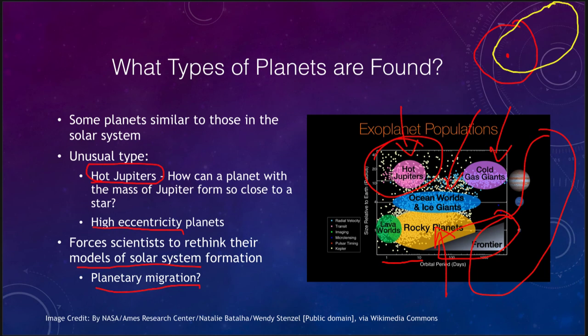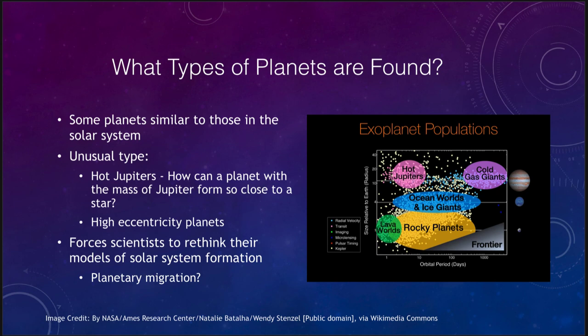But we do have to rethink how things work. Planetary migration may have played a part in our own solar system. But maybe it plays an even larger part in others, allowing those Jupiters to not only migrate closer, but to get much closer. And in fact, to the point where they orbit around their stars with periods of just a couple of days, instead of many, many years.